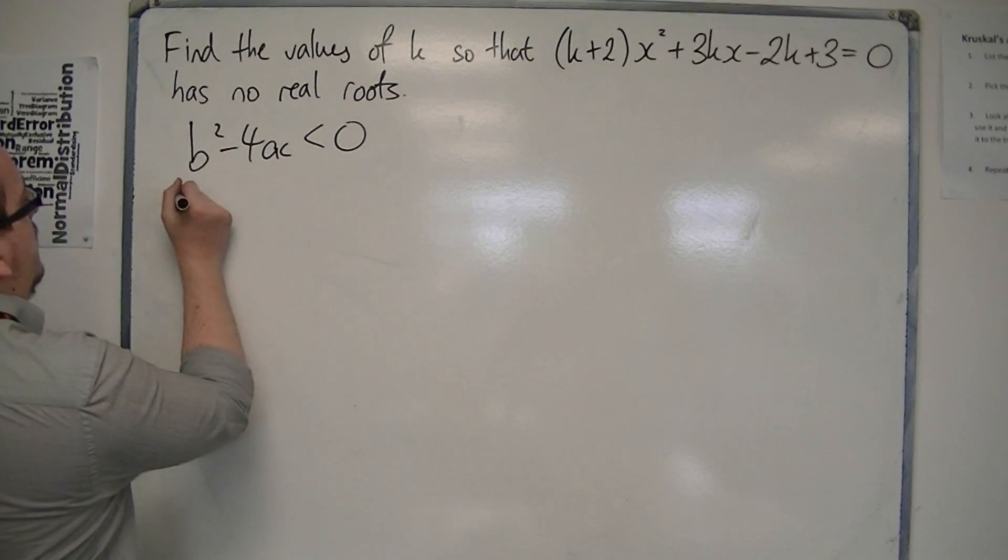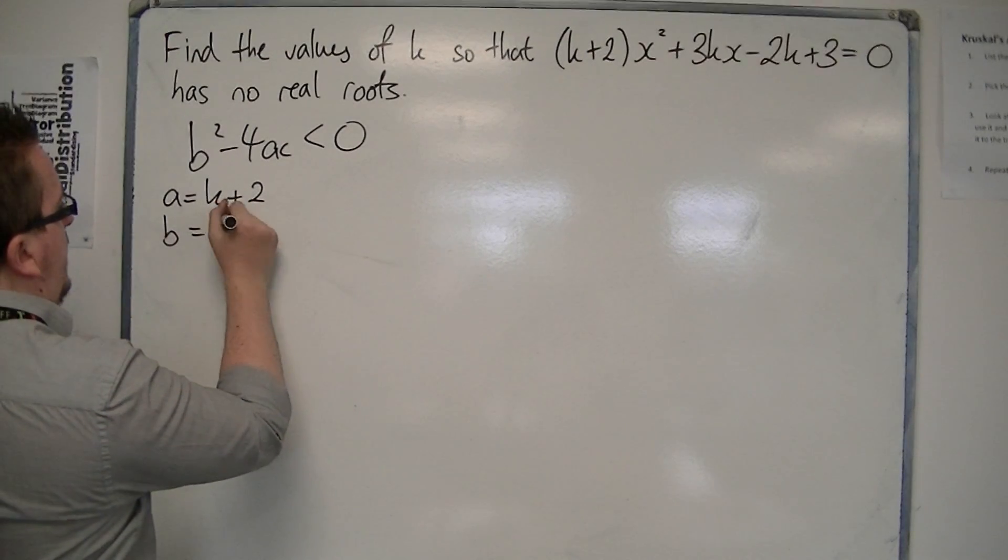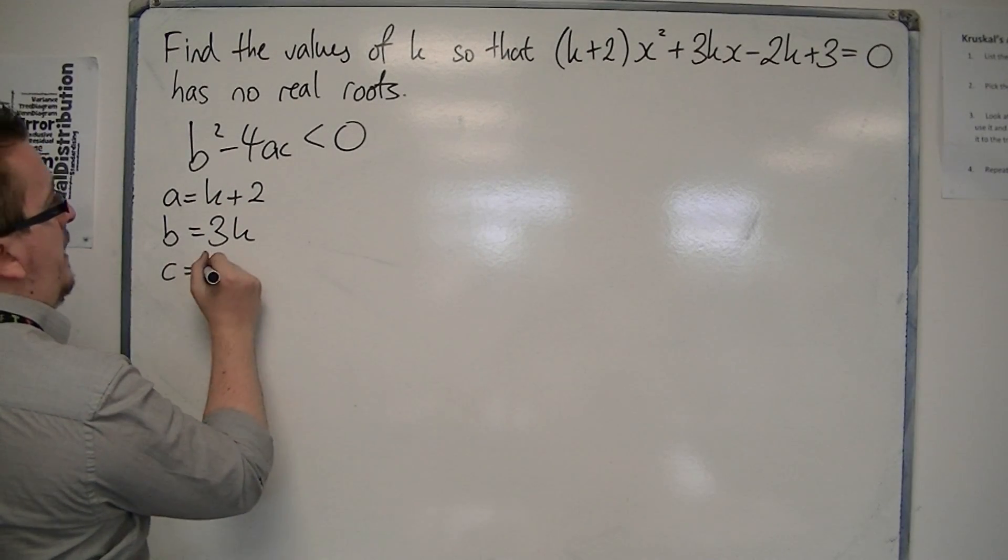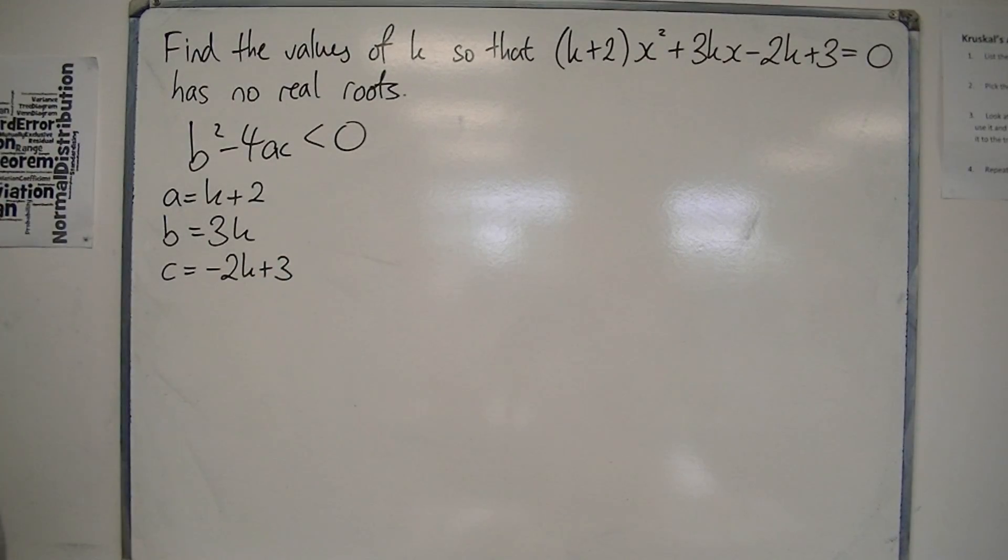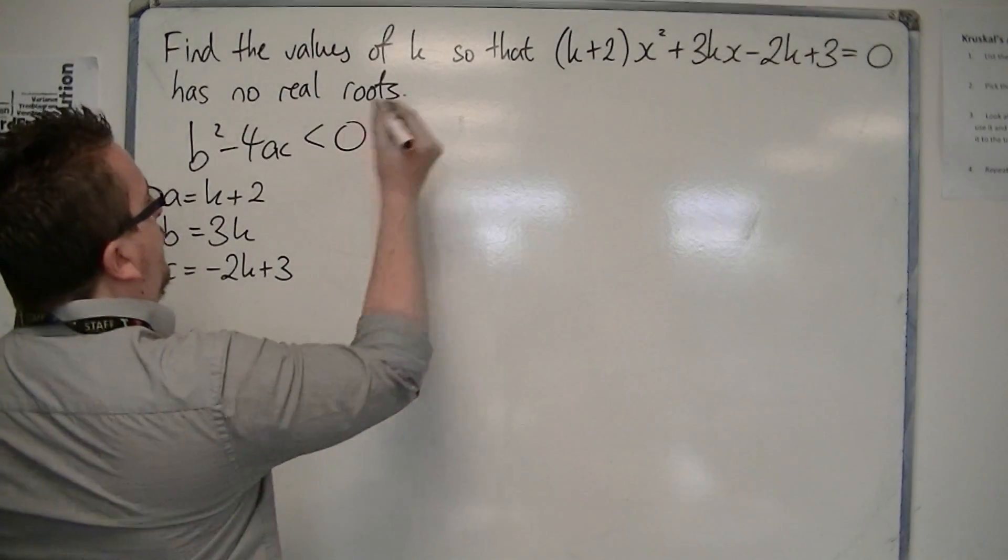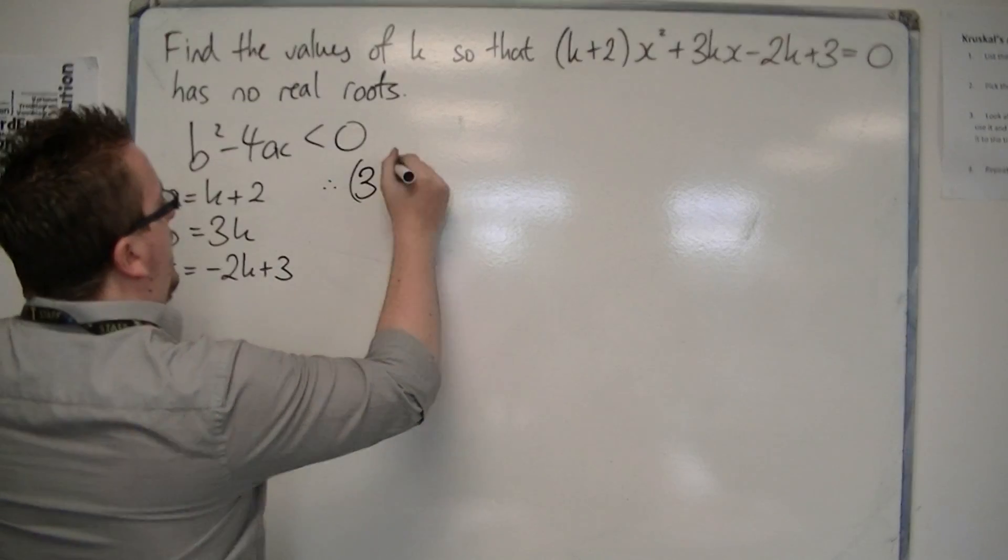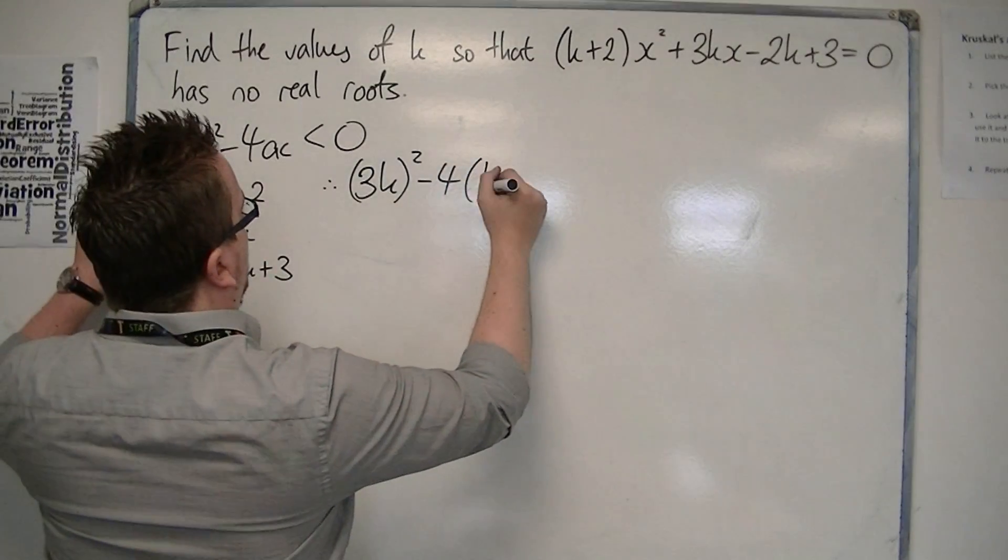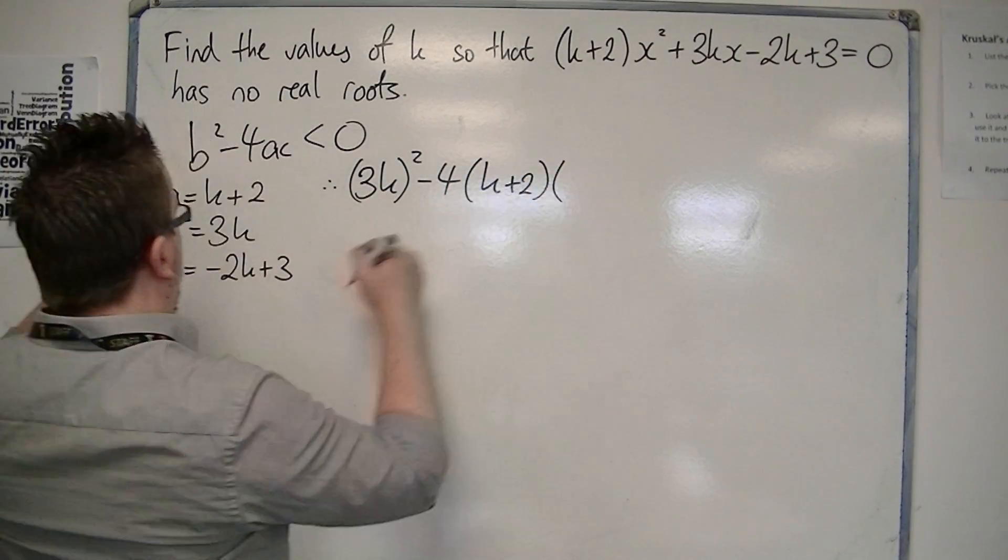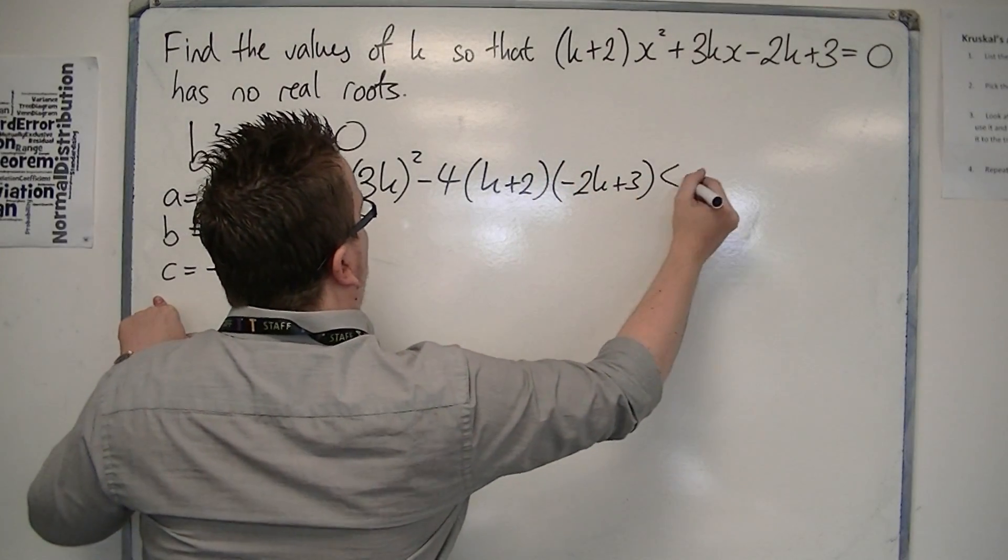So we have a is k+2, b is 3k, and c is -2k+3. So b² - 4ac is less than 0. So we've got b², so that's 3k all squared, take away 4 lots of a times c, and that must be less than 0.